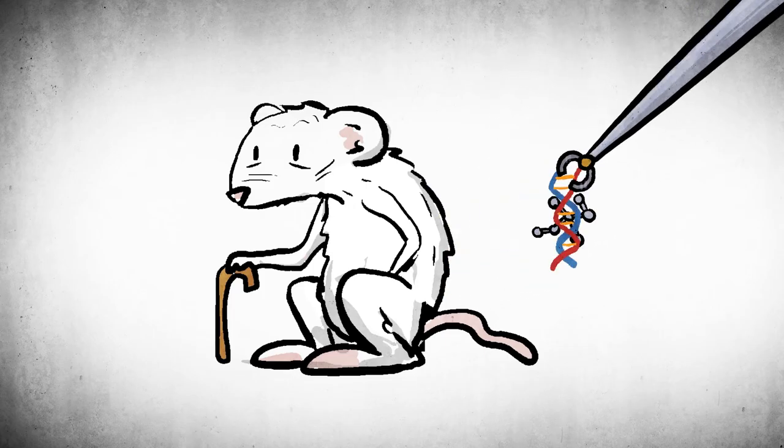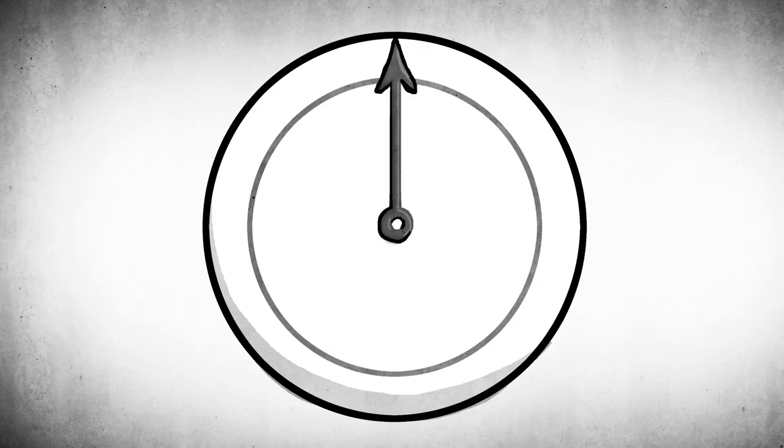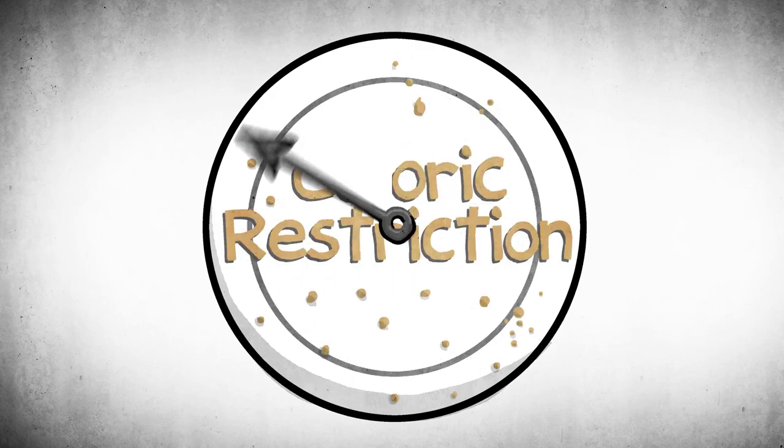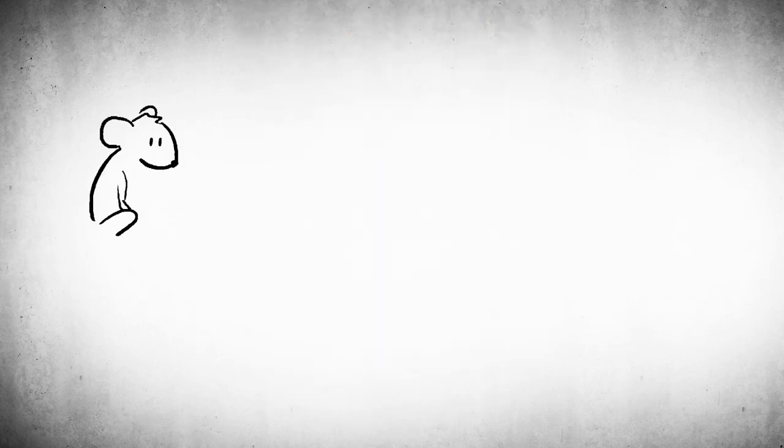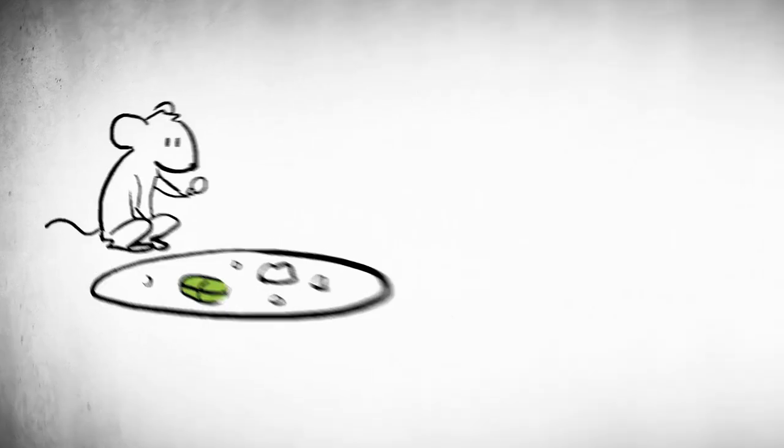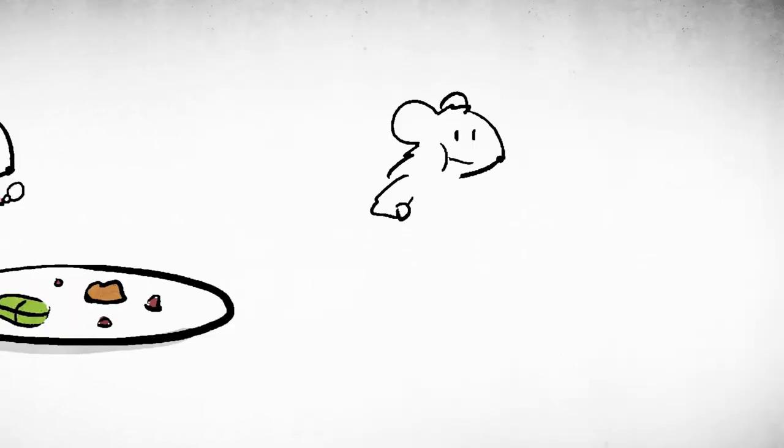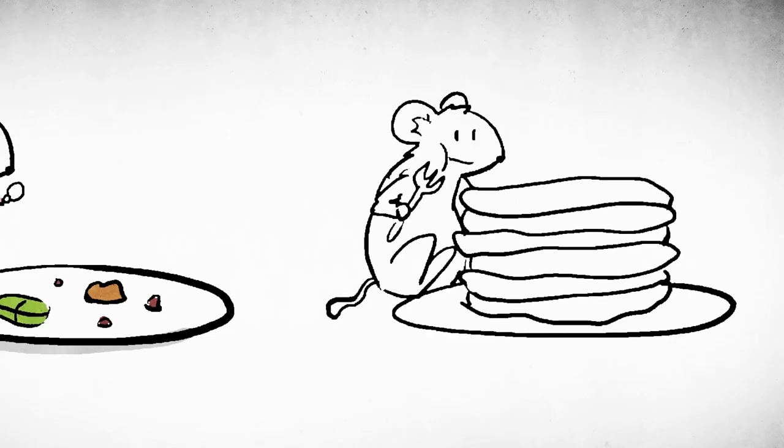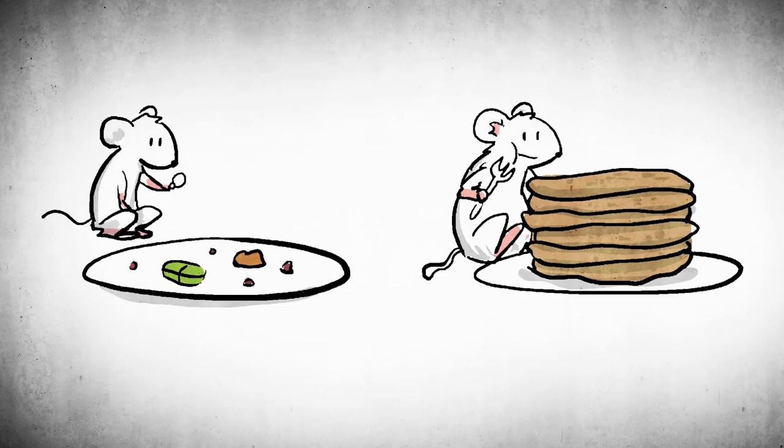There's also interventions that modulate aging. The most famous of them all is caloric restriction, restricting the amount of calories animals eat while keeping nutrients like vitamins and minerals healthy. And this has been known for decades to extend lifespan in rodents, like 50%. And they're healthier for longer, and it's quite impressive.